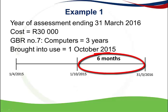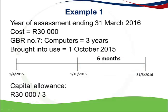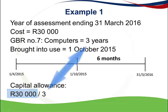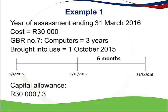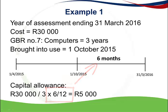Because it was only used for 6 months, the allowance is apportioned. To calculate the capital allowance, take the cost of the asset and divide it by the number of years determined by General Binding Ruling number 7 — in this case 3 years — then multiply by the portion of the year used, which is 6 over 12. This gives a capital allowance of 5,000 Rand for the 2016 year of assessment.